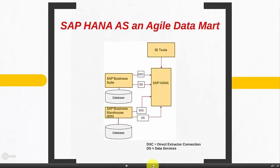Our first use case is SAP HANA as an Agile Data Mart. Let's first try to understand what a Data Mart is. A Data Mart is generally a repository where information is gathered from different transaction systems. Once it is gathered, a semantic layer is created on top of it, and then users use this information to create different reports and for various other purposes.